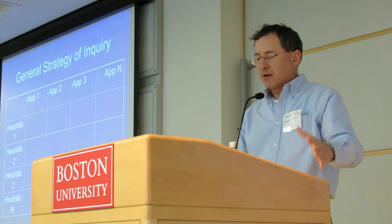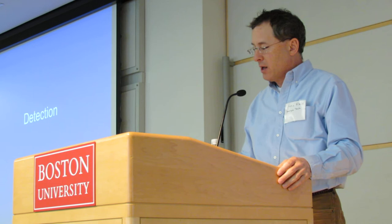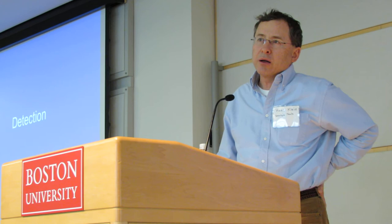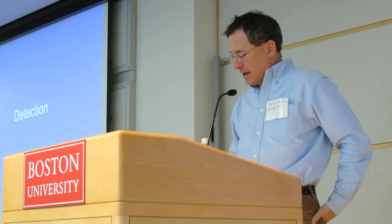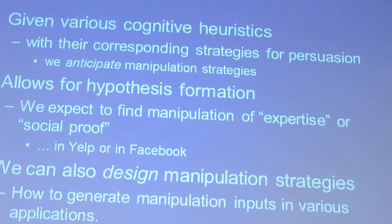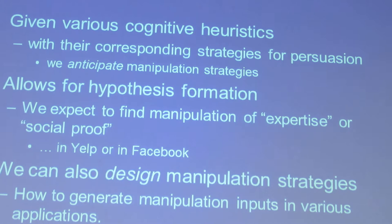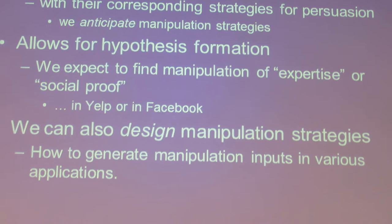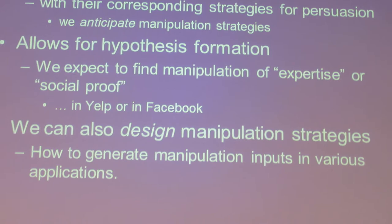With this idea, we can conceptualize and think about information manipulation and persuasion — and now it becomes empirical. How would you detect it if it's going on? My role right now has not been very empirical. Given the various cognitive heuristics and corresponding strategies for persuasion, we can anticipate manipulation strategies — and every time I come up with a new heuristic, I can hunt for it in various applications. I think I'll find it.